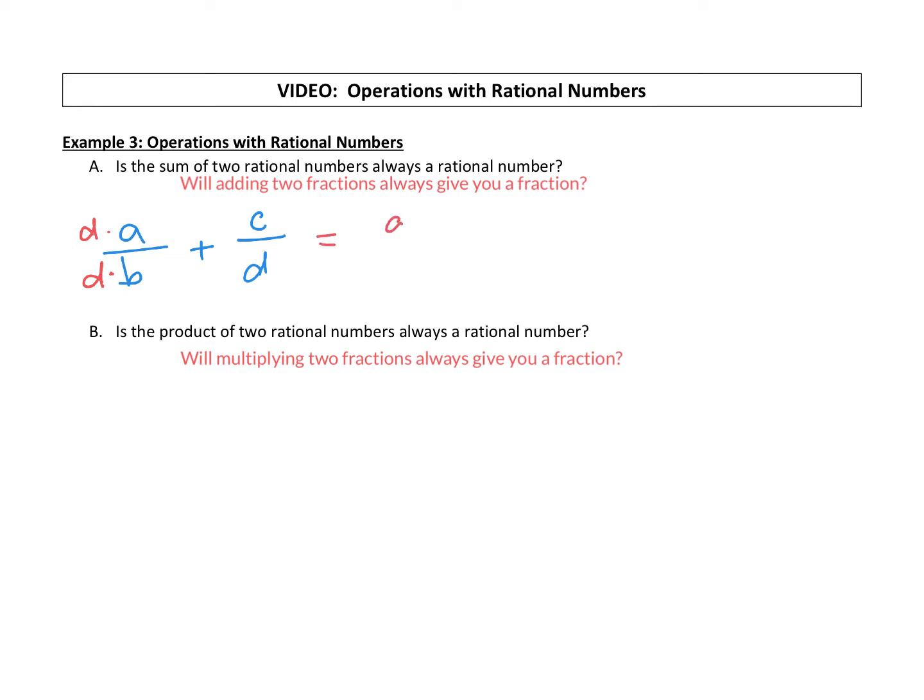So that would give me AD over BD plus, now the second fraction has a D, which is now common with that, but we have to multiply in a B. So we're going to multiply in a B to the denominator and to the numerator. So C times B is BC over BD. Do you see how we have a common denominator now? BD.